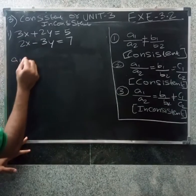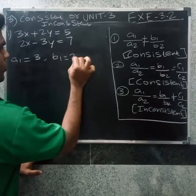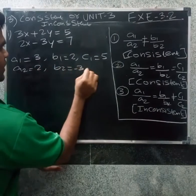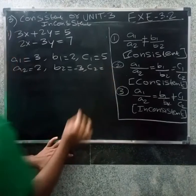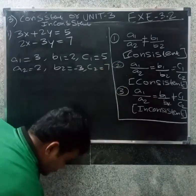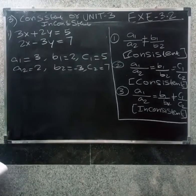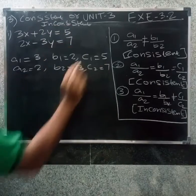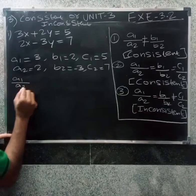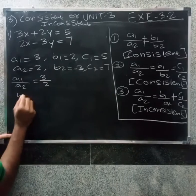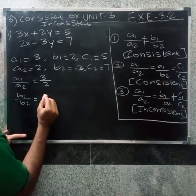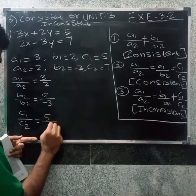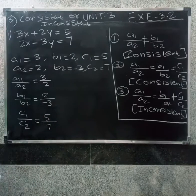For the first problem: a1 equal to 3, b1 equal to 2, c1 equal to 5. Next, a2 equal to 2, b2 equal to minus 3, c2 equal to 7. So a1 by a2 is equal to 3 by 2, b1 by b2 equal to 2 by minus 3, c1 by c2 equal to 5 by 7.